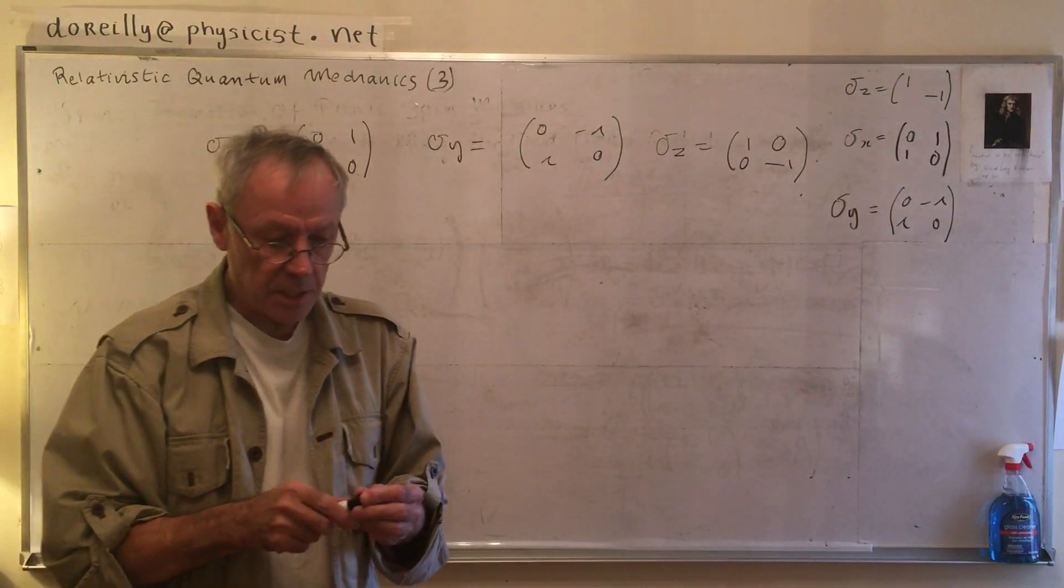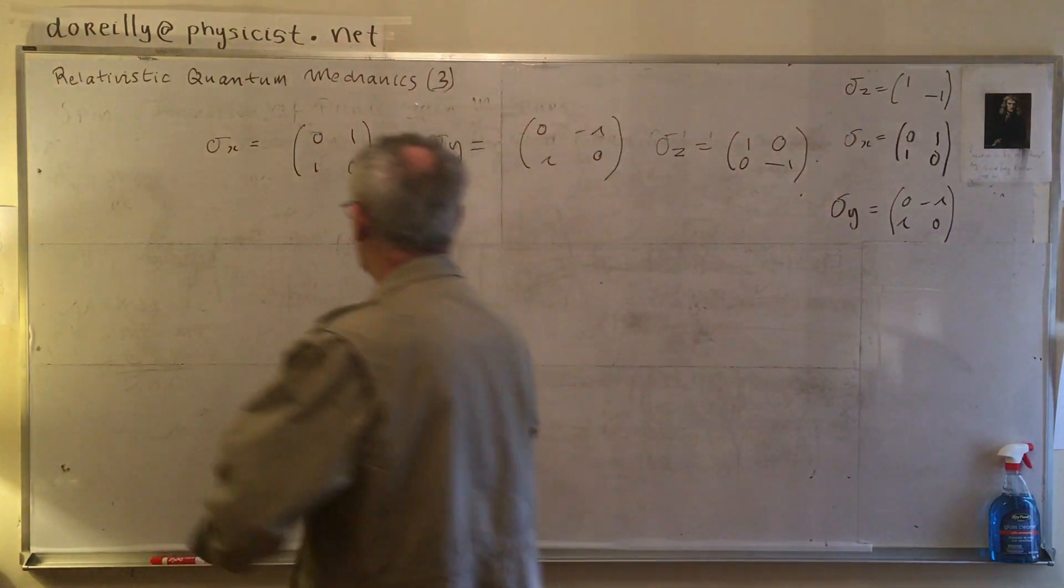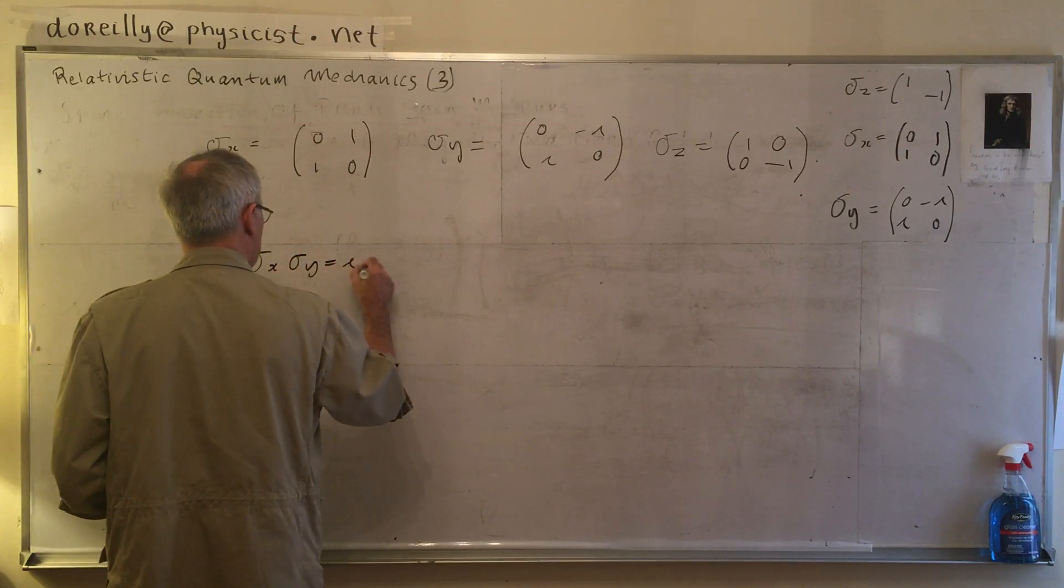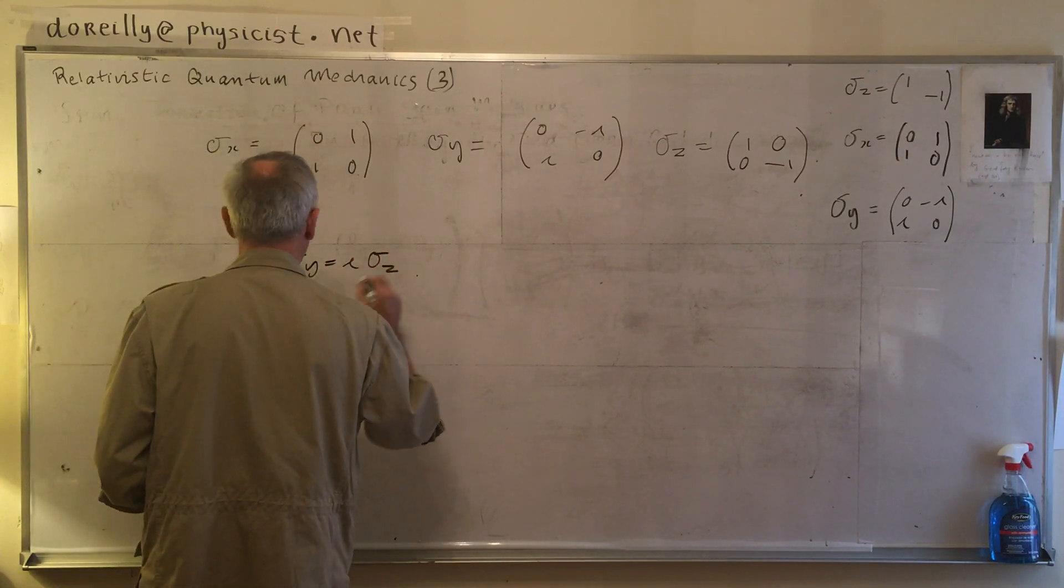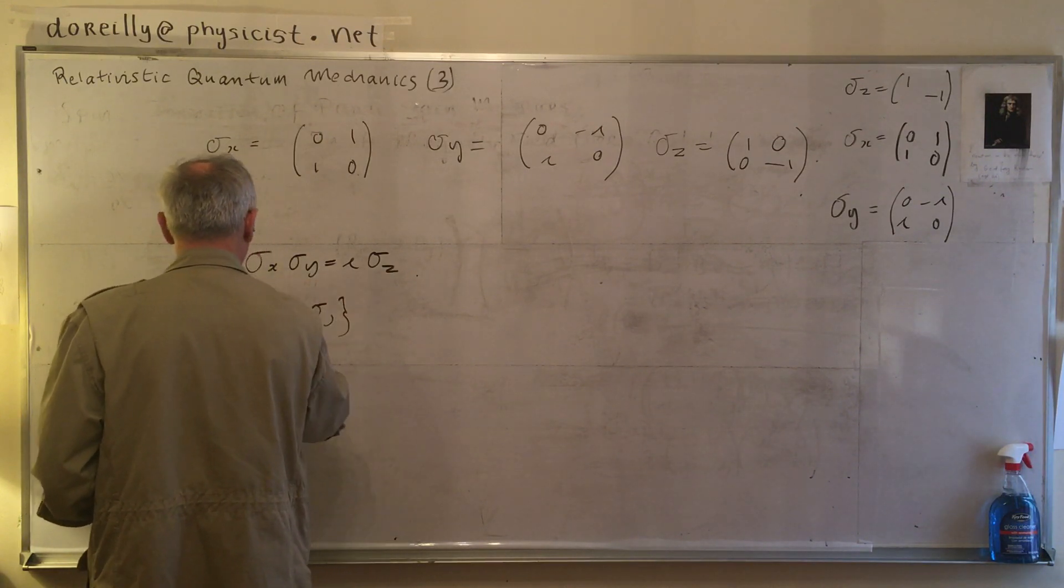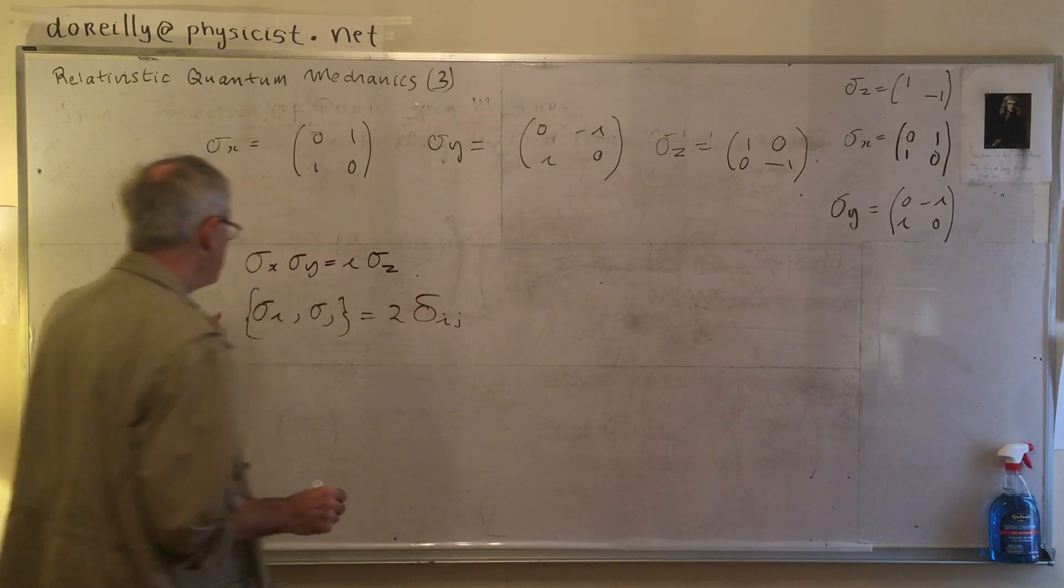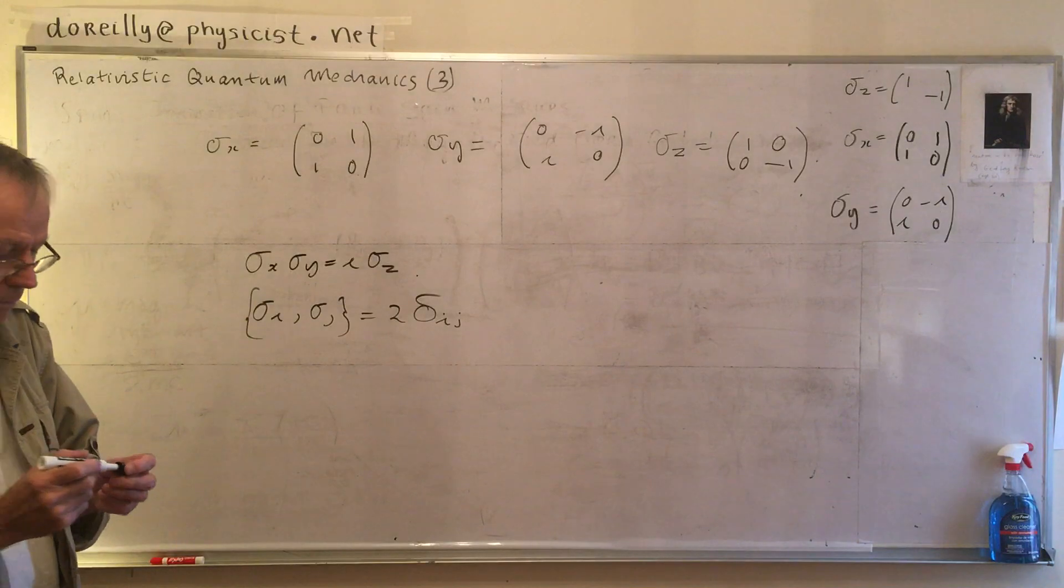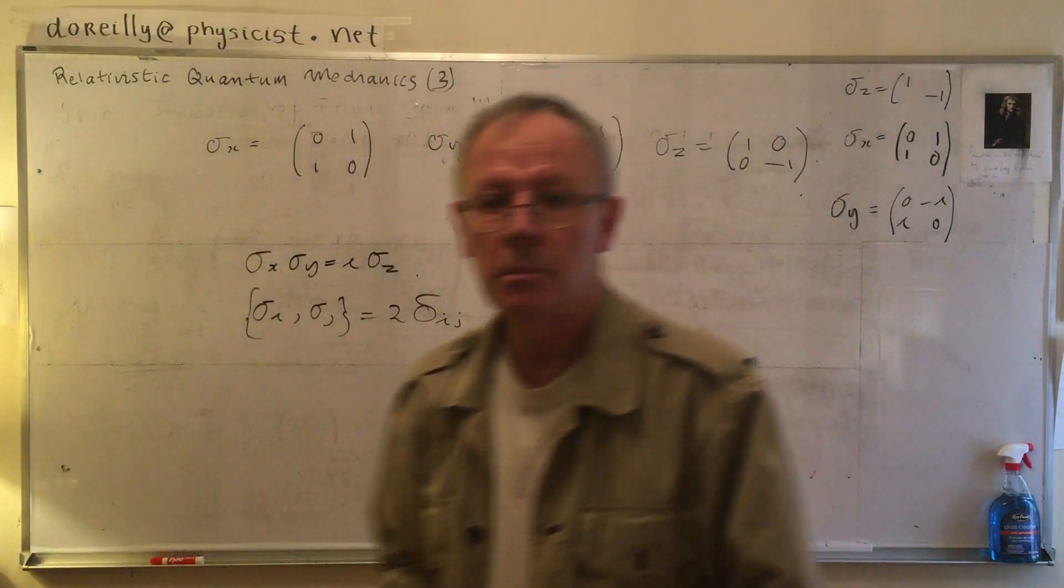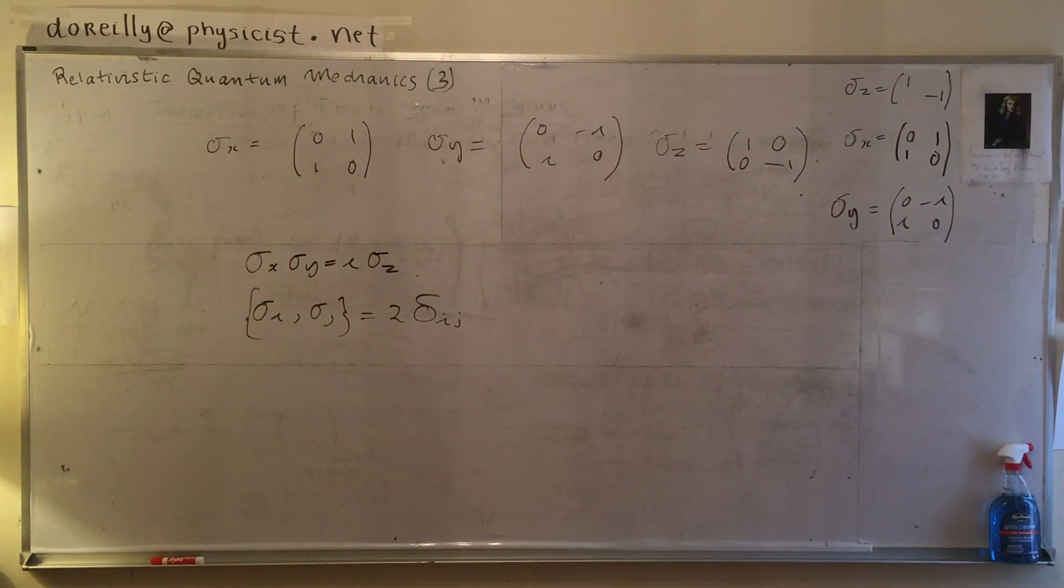There are the Pauli spin matrices. I will deal with the other versions of this and then deal with the algebra of the sigma matrices later. For example, we've been using this one in the Dirac equation. That'll do this for now. I'll post this one.